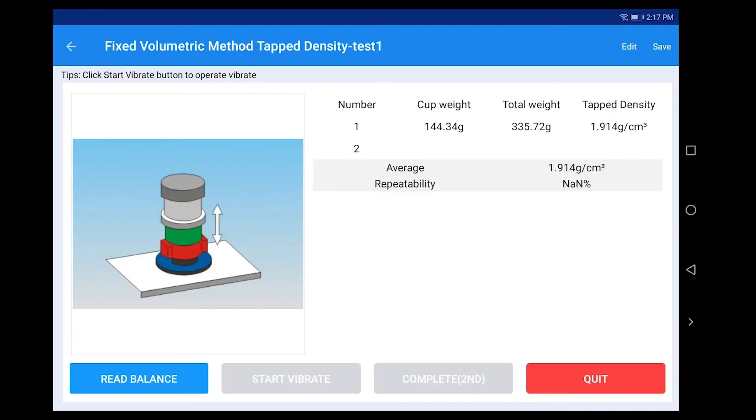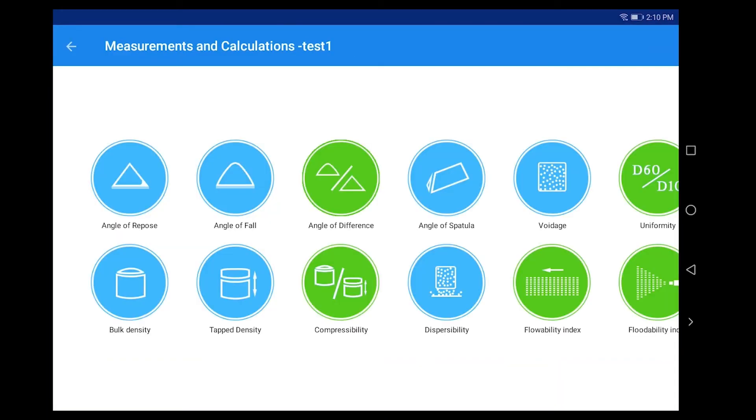Click Complete first, click Save, and click Quit to complete the tap density measurement fixed volumetric method. It is recommended to repeat the test three times to calculate the average value.